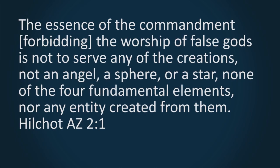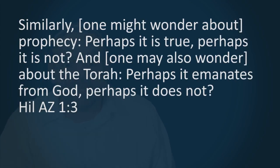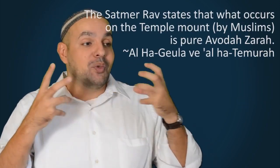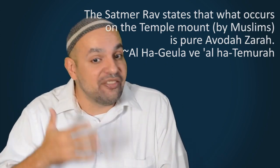The Rambam himself makes the point in Mishneh Torah that only because one worships a singular God does not mean that one is free from the label of idolater. He states, The essence of the commandment forbidding avodah zarah is not to serve any of the creations. Not an angel, a sphere, or a star. None of the four fundamental elements. Nor any entity created from them. In the same perek, he states that even denying prophecy is a form of avodah zarah.